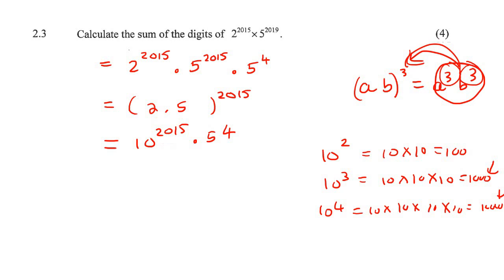So imagine 10 to the power of 2015. Well, that's going to be 2015 tens that you multiply together, but the answer will definitely be a 1 in the front, and then there'll just be like loads and loads of zeros.